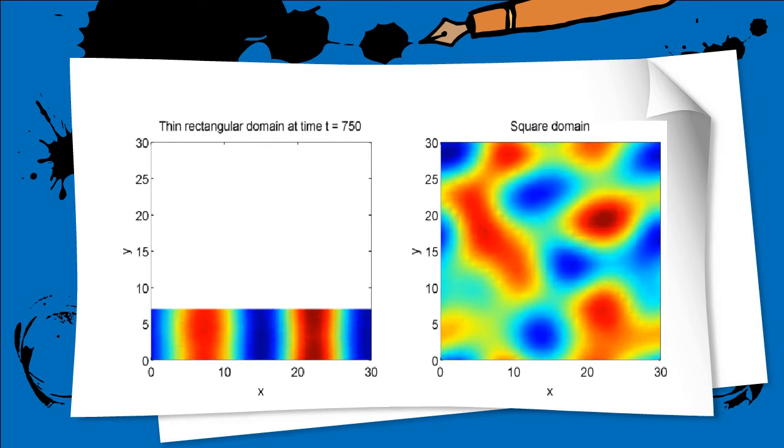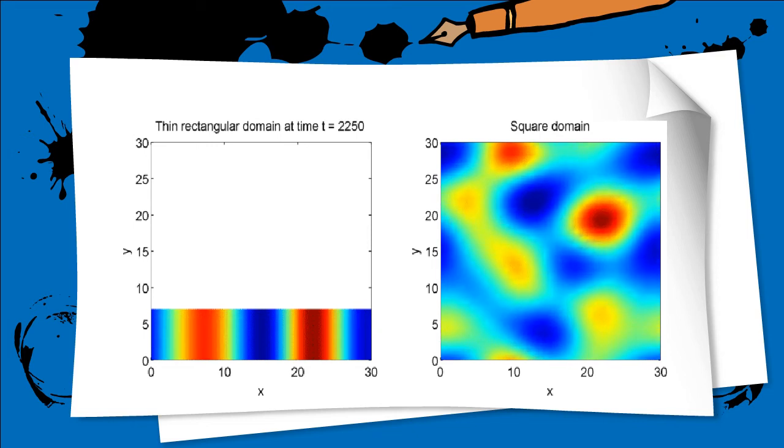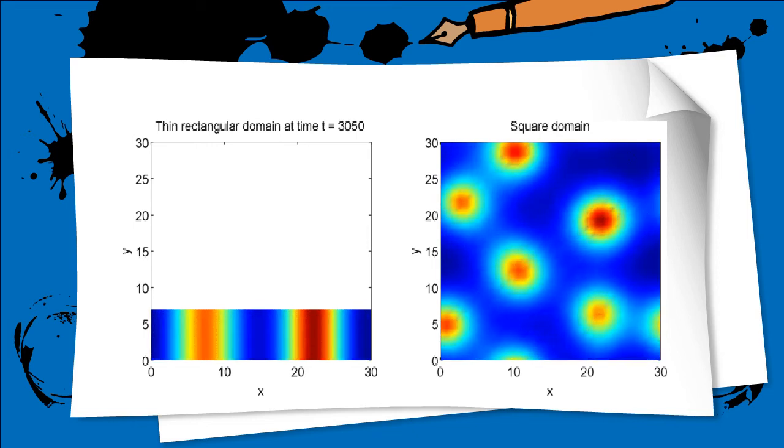One way of thinking about this is that in this thin domain, patterns only form in the x direction, whereas on the other hand, patterns develop both in the x and y direction in the square domain.